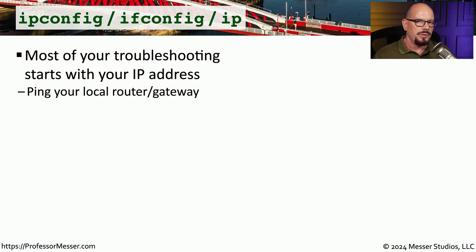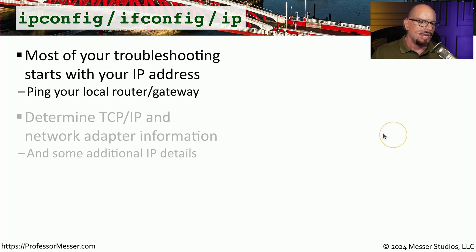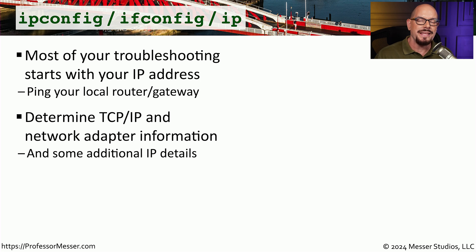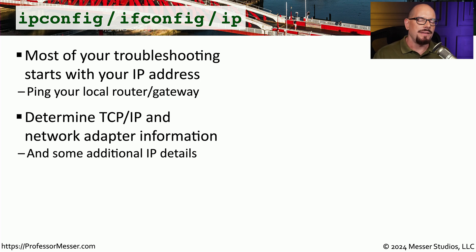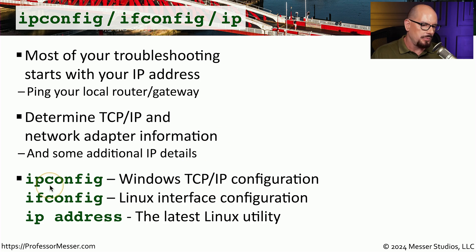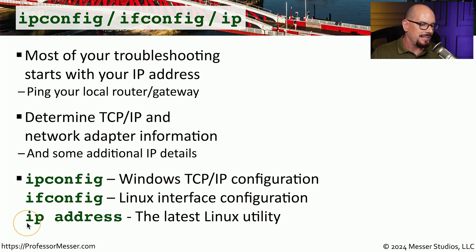When you first sit down at a computer to start troubleshooting, one of the most useful things to know is the local IP address configuration. Depending on the operating system, you'll use different commands. In Windows, you'd use the ipconfig command. In Linux or macOS, you can use ifconfig, and a newer version of that command is 'ip address' — two words — which shows similar IP address information.